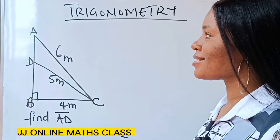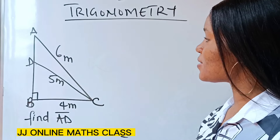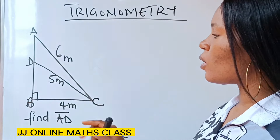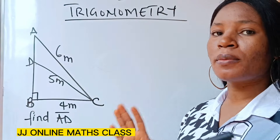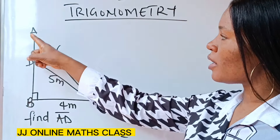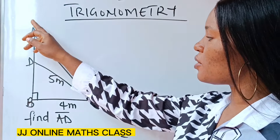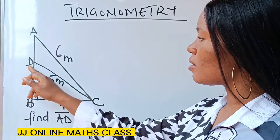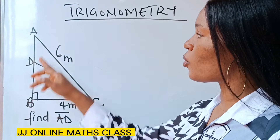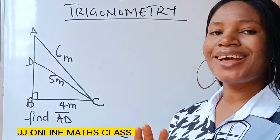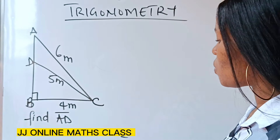Welcome back to my class. This is a very easy question — we are asked to find the length AD. We can get this done using the Pythagorean theorem, because we can get AD by subtracting the value of DB from AB. Let's get to it immediately.